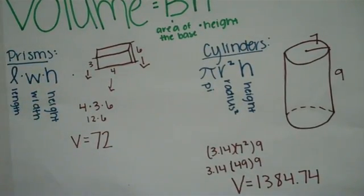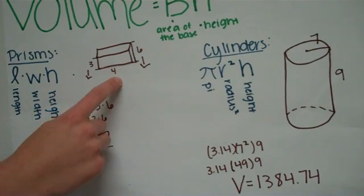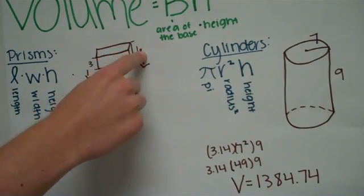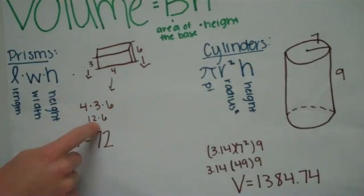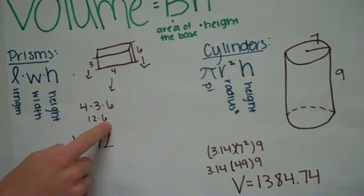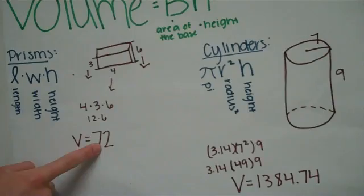So for this example, you have 3 for the width, 4 for the length, and 6 for the height. So you multiply them together, and you get 12, so 4 times 3 is 12, times 6, and you get 72 units cubed.